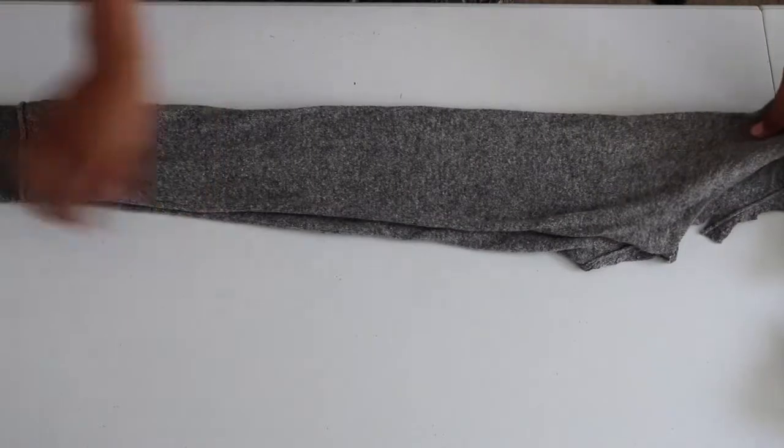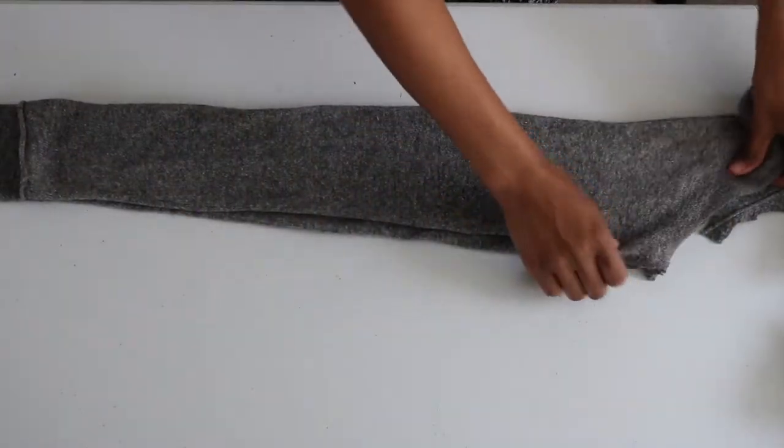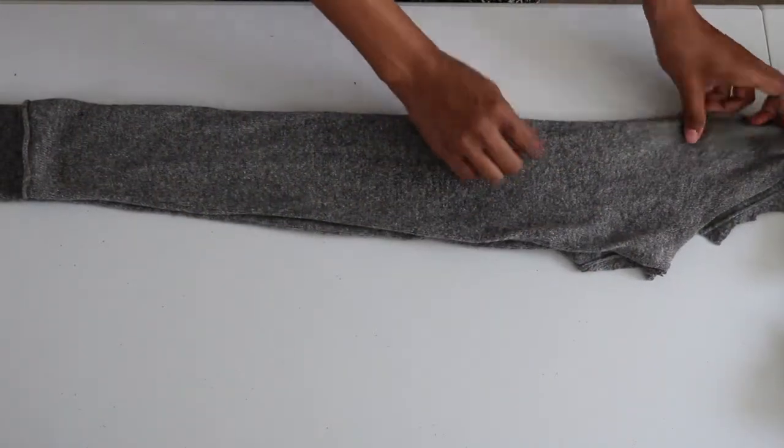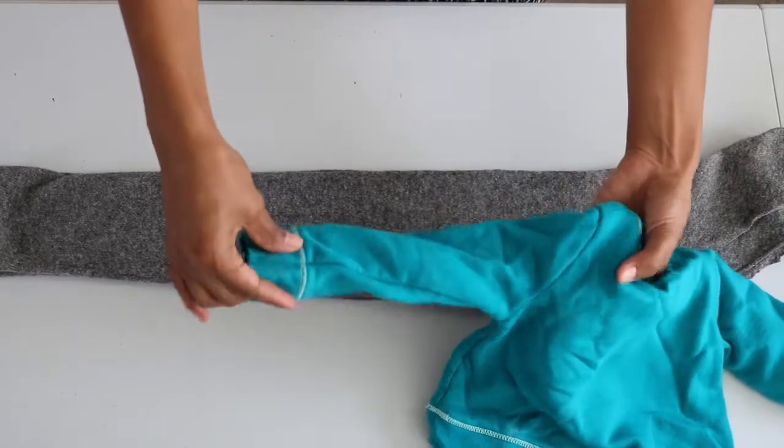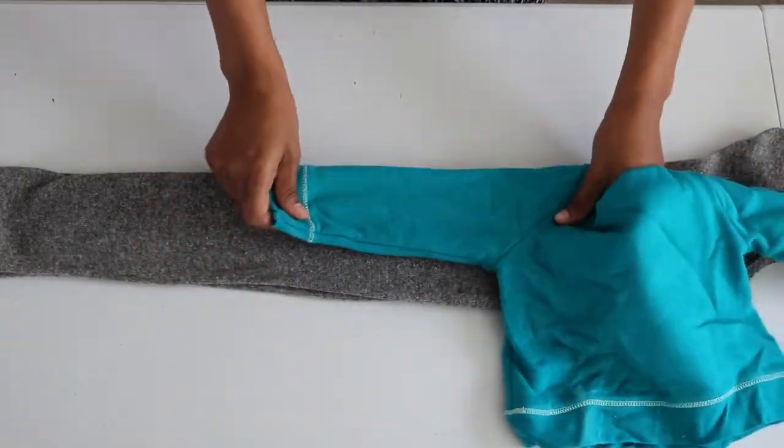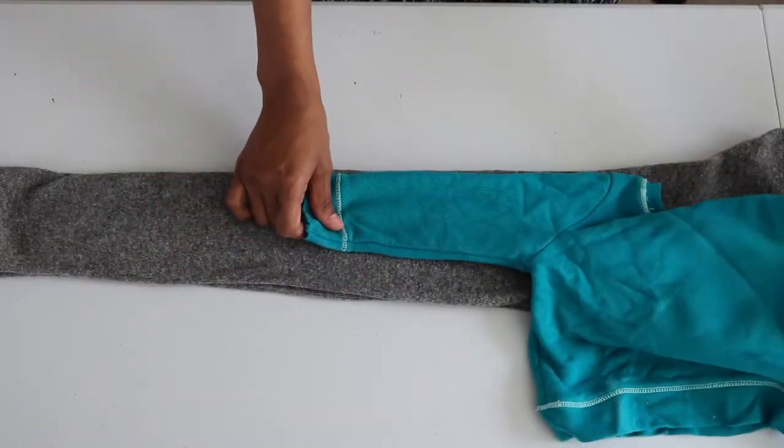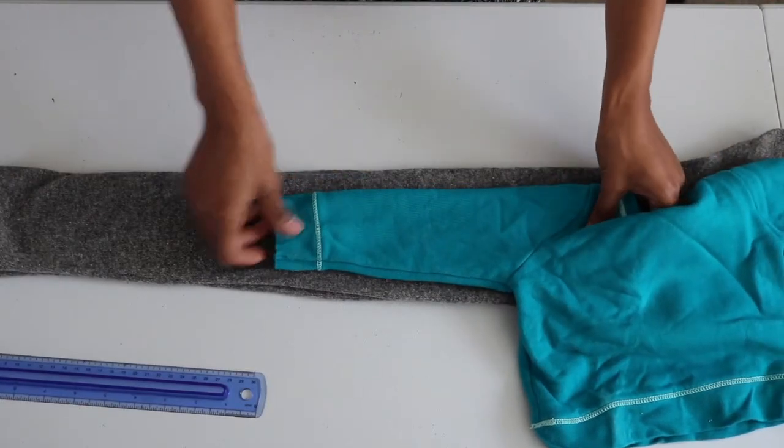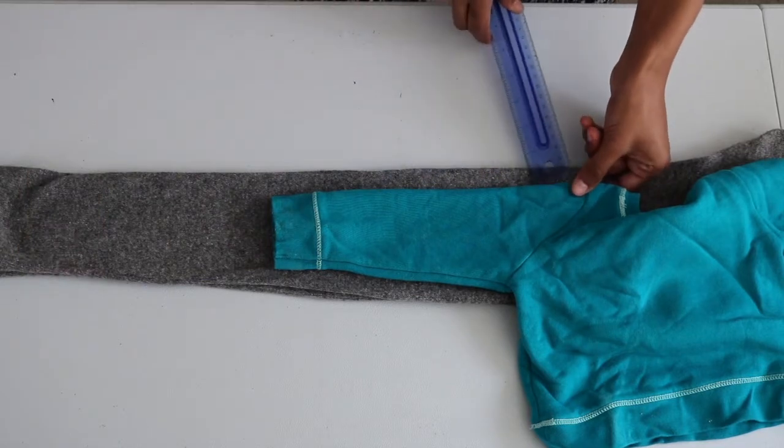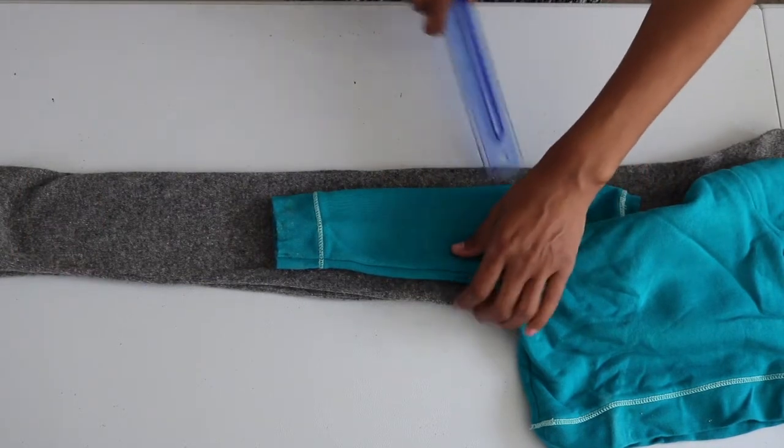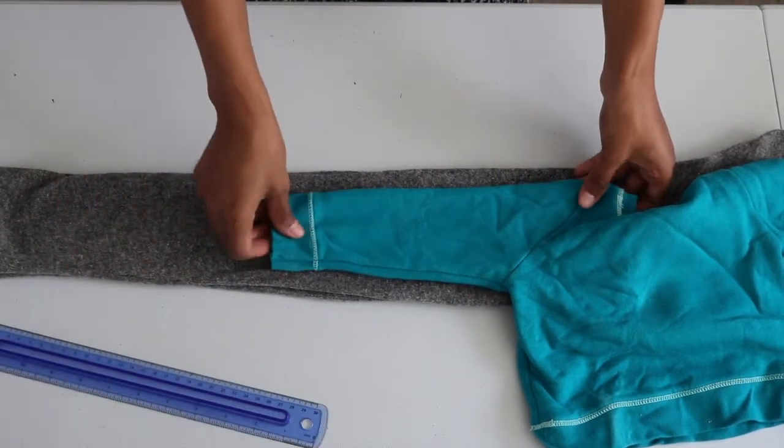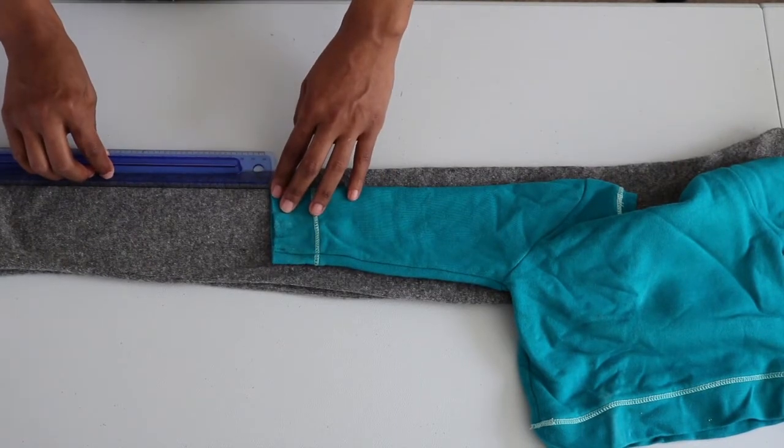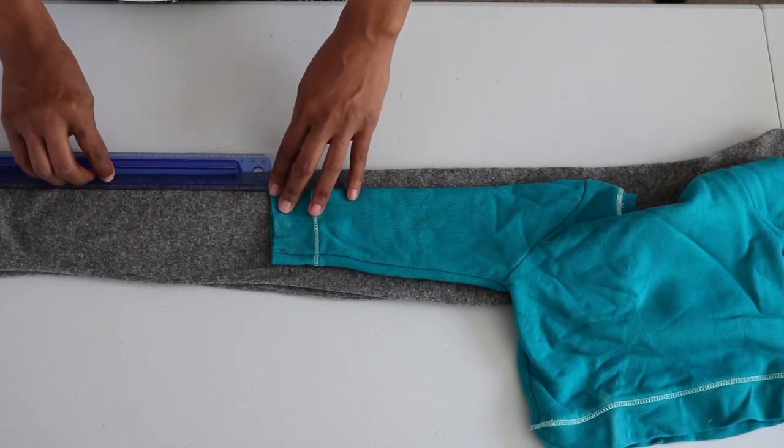I placed one of the sleeves on top of the other and smoothed it out. I placed the sleeve on the sweater directly over the fold. Then I placed it back about an inch from the fold to add more to the width.